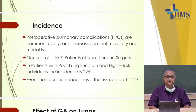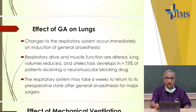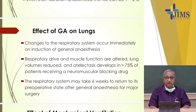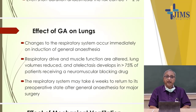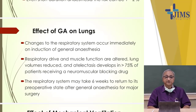The lung is always involved. Changes to the respiratory system occur immediately on induction of general anesthesia — when the patient is put to sleep, a muscle relaxant is added, and the tube is passed through the larynx into the trachea. The respiratory drive and muscle function are altered.